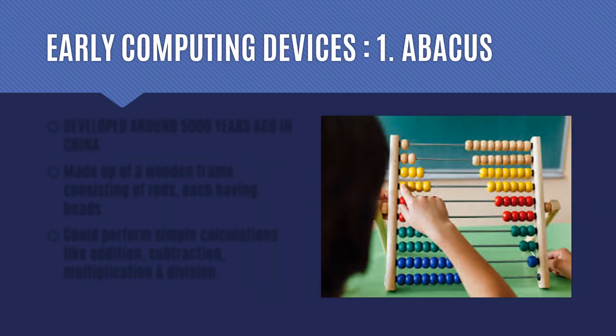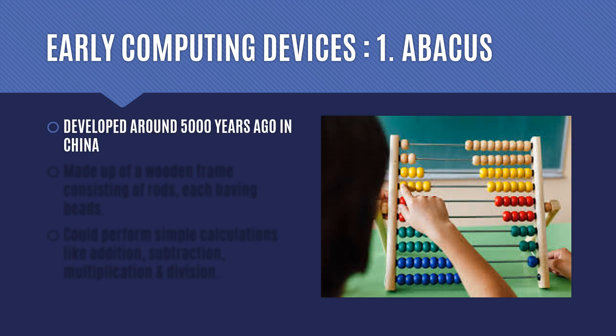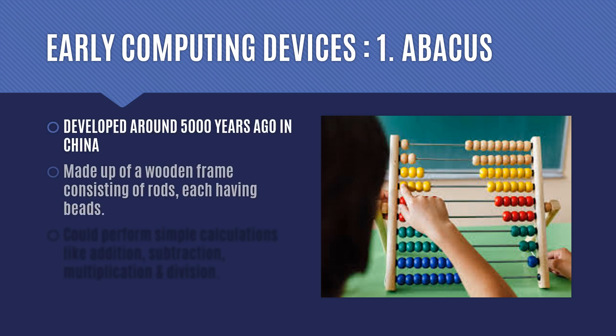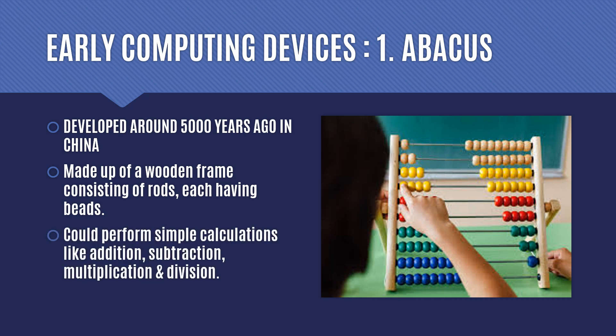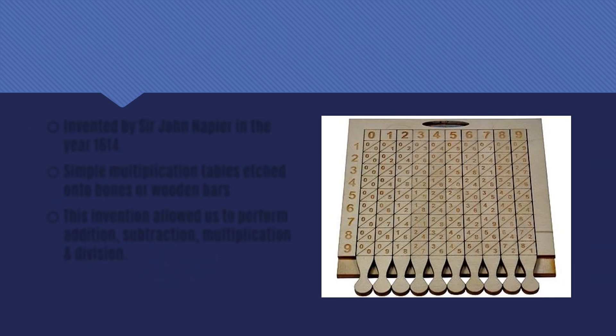Let us discuss the early computing devices — the initial calculating devices in the history of computers. The first device was known as the abacus. It was developed around 5000 years ago in China. As you can see in the picture, it was made up of a wooden frame with rods, each rod having a number of beads. The beads were manipulated using fingers and this device could perform addition, subtraction, multiplication and division.